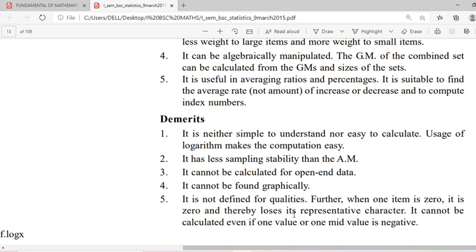Demerits: it is neither simple to understand nor easy to calculate. Usage of logarithm makes the computation easy. It has less sampling stability than arithmetic mean. It cannot be calculated in open end data. It cannot be found graphically. It is not defined for qualities. When one item is zero, it is zero, thereby loses its representative character. So if we cannot use when one of the observations is zero or negative, that is the main demerits.